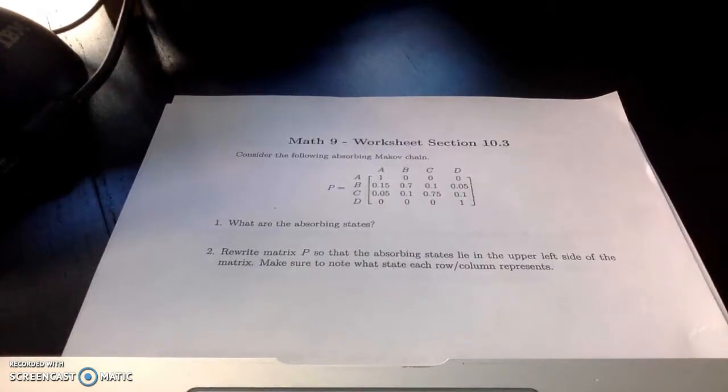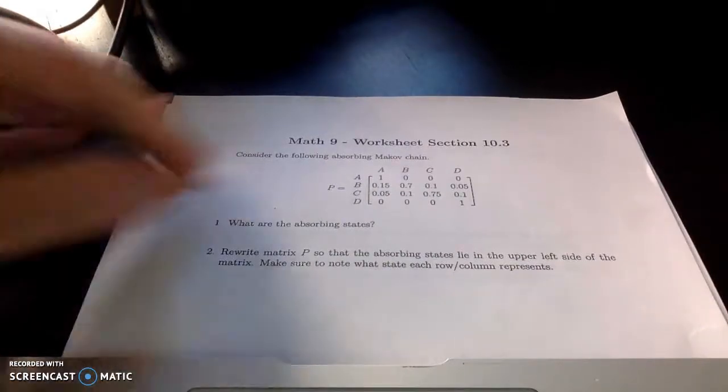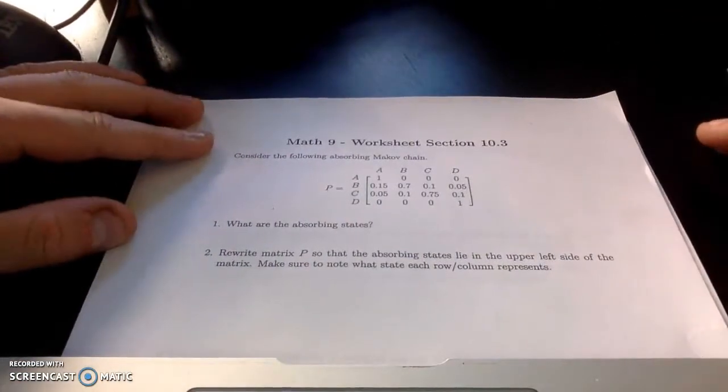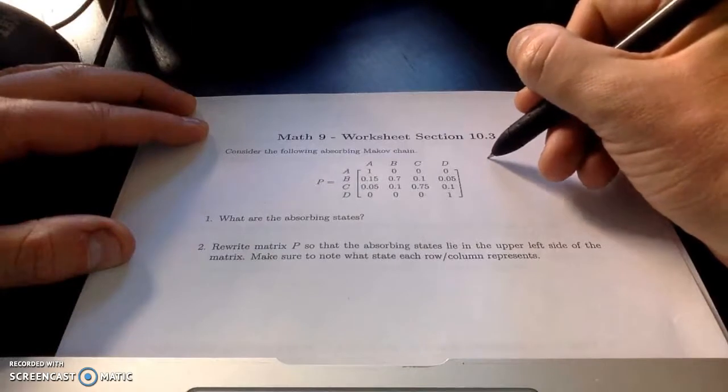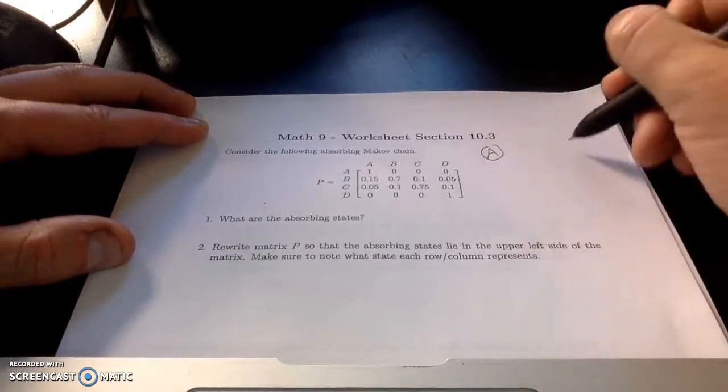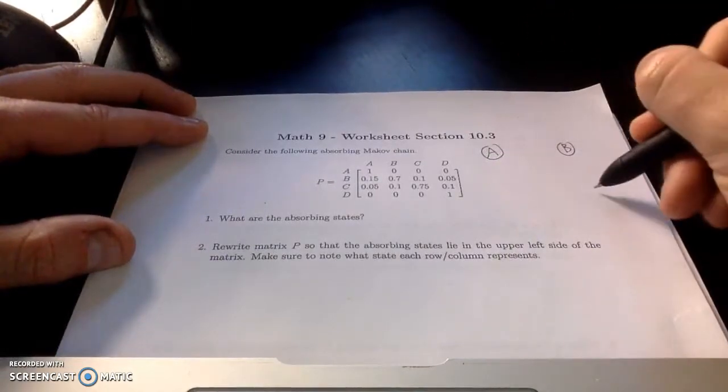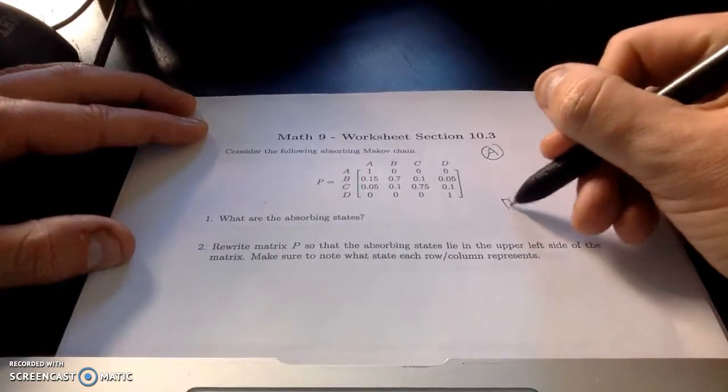So I need to figure out the absorbing states of this transition matrix. What I'm going to do is draw the graph. I'm going to draw state A, state B, state C, state D.